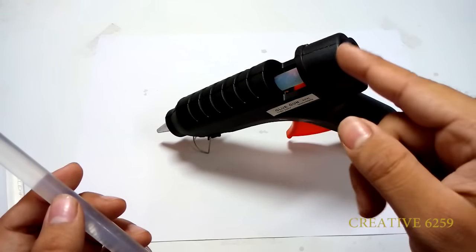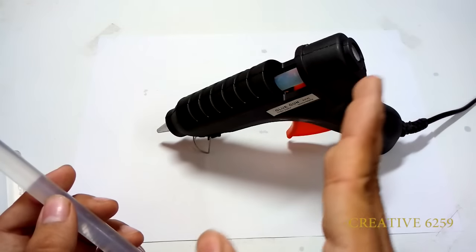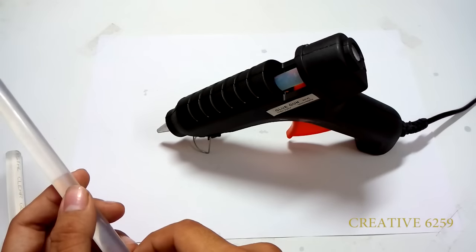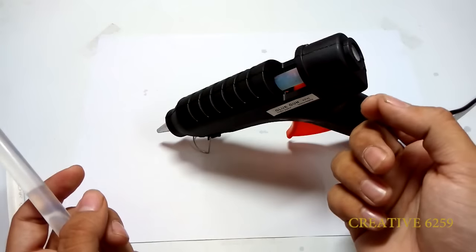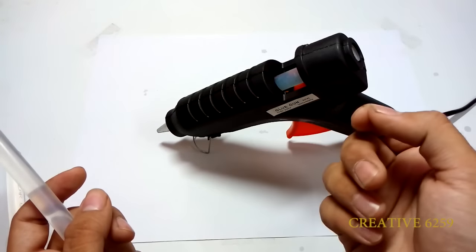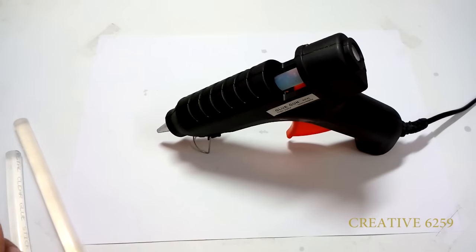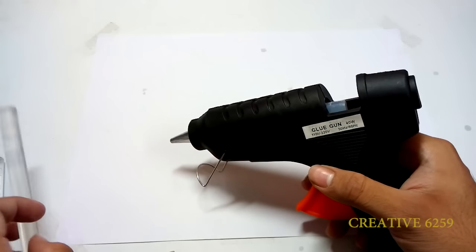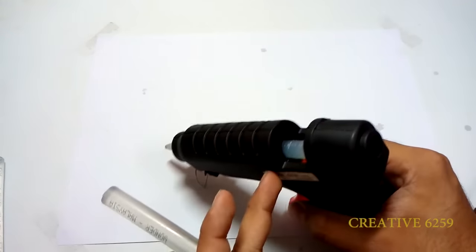Please do not try to remove the old glue stick from this hole because this hole has a ring inside it which helps to push the old glue stick to the front of the glue gun. If you try to remove the stick, it can damage that ring and your glue gun can get damaged.